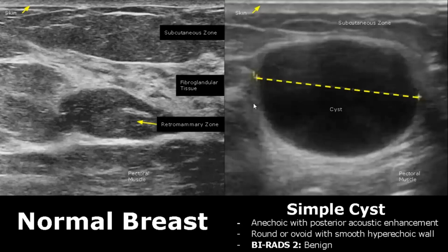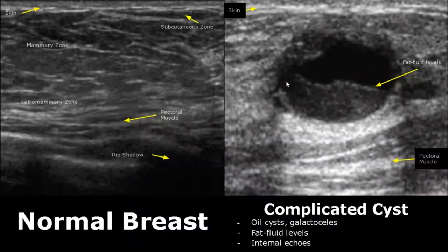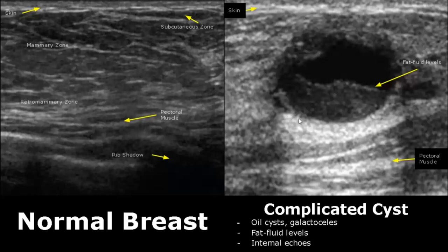A complicated cyst will have fat-fluid levels and internal echoes. The low-density fluid is at the top and the high-density fat is at the bottom. These cysts may resemble malignant lesions, which is why a follow-up is needed.